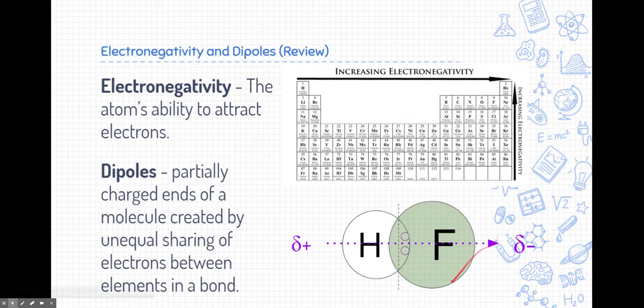So here is an example where hydrogen and fluorine are attached to one another based on a covalent compound. Now hydrogen and fluorine have created a dipole, partially charged ends because of unequal sharing. You can see here that fluorine, being a higher electronegativity, attracts those two electrons that they're supposed to be sharing to itself a little bit more.